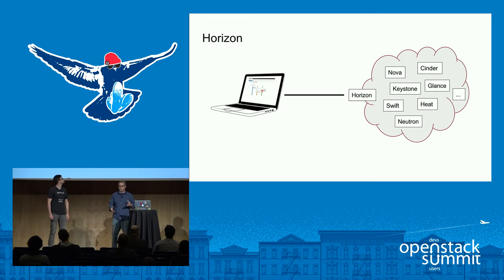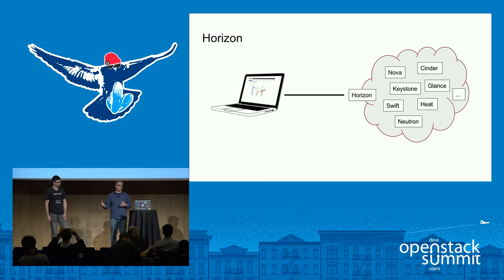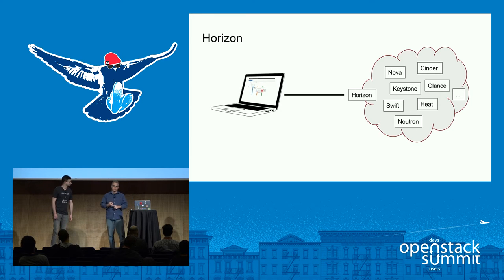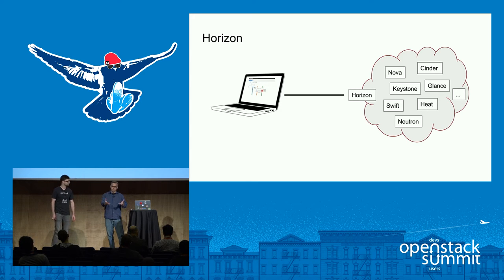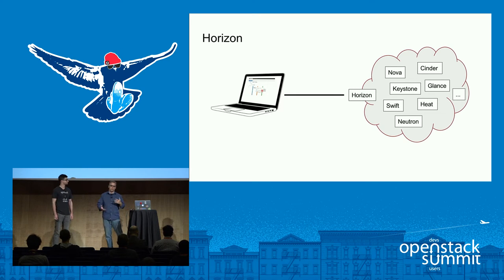Assuming you know what Horizon is, but as a brief refresher: Horizon is the graphical web interface that lets you manage OpenStack and view your resources. We don't have a database, so we talk to the services on the back end. We have some core service support built in — generally the classical core services in OpenStack. We also have extensive plug-ins; there are at least 25 to 30 or more separate plug-ins that plug into Horizon.